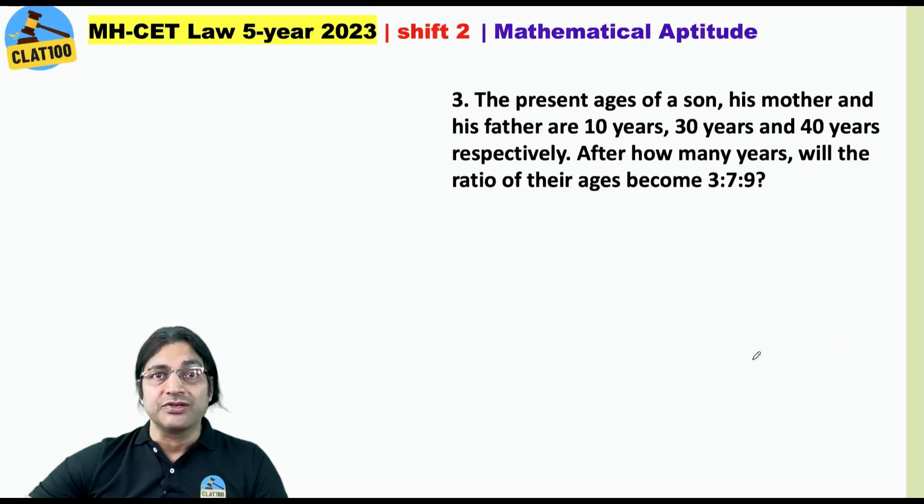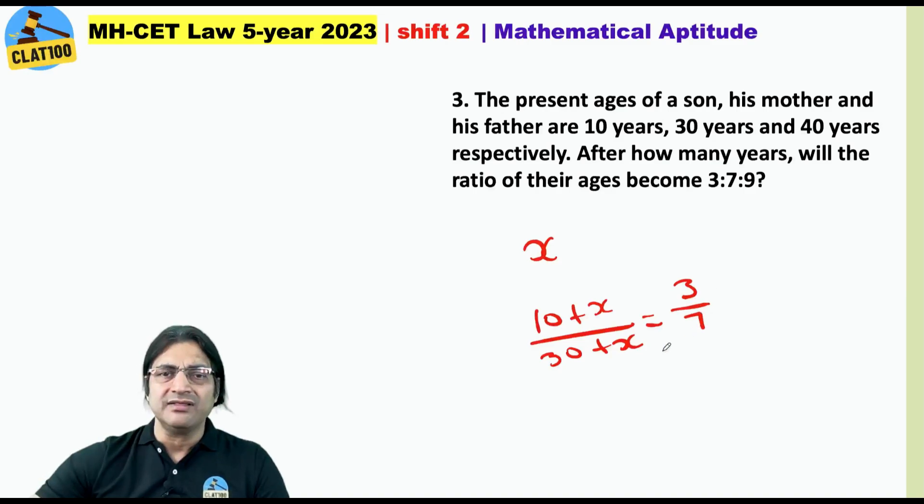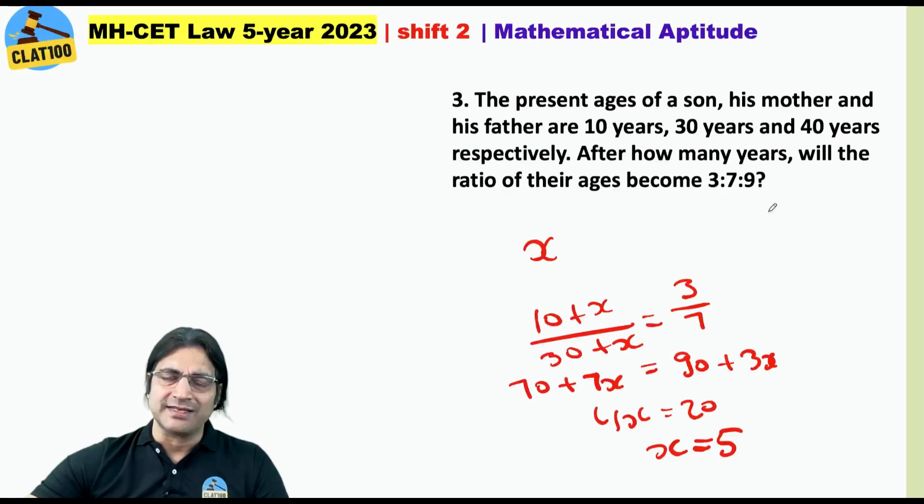Let's say it does not strike you to take help of the options. How would you do it then? Let's say it happens after x years. The age of the son after x years would be 10 plus x, the mother would be 30 plus x. The ratio of these two should be 3:7. This gives you 70 plus 7x equals 90 plus 3x. So 4x is 20, x is 5. Putting the value of 5, in case of the father's age as well you can see the ratio becomes 3:7:9. Your answer is 5 years.